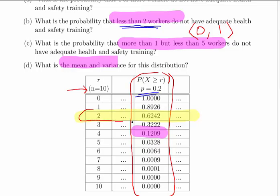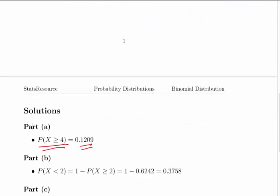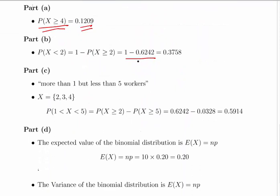What we're asked for is the complement of that, so it's simply a case of 1 minus 0.6242, and you should get 0.3758. So the probability of X less than 2 is 1 minus the probability of X greater than or equal to 2.